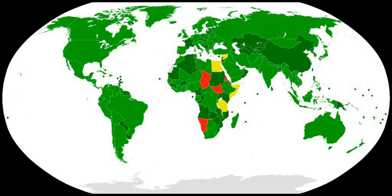It commits the 182 states which are party to it as of September 2018 to prohibit the development, production, and stockpiling of biological and toxin weapons. However, the absence of any formal verification regime to monitor compliance has limited the effectiveness of the Convention.